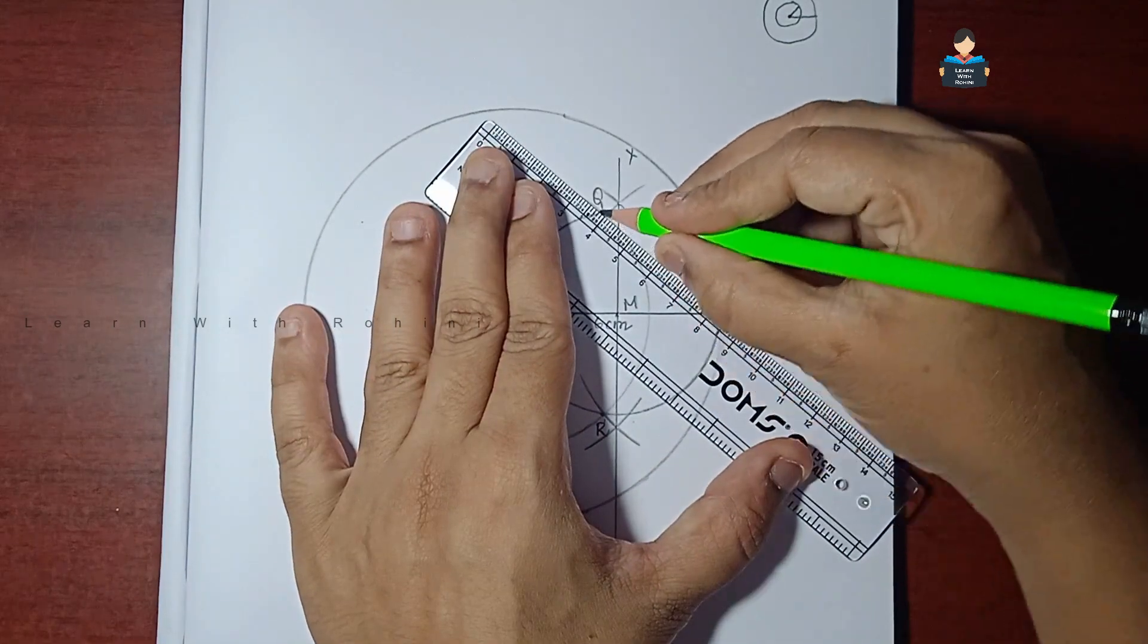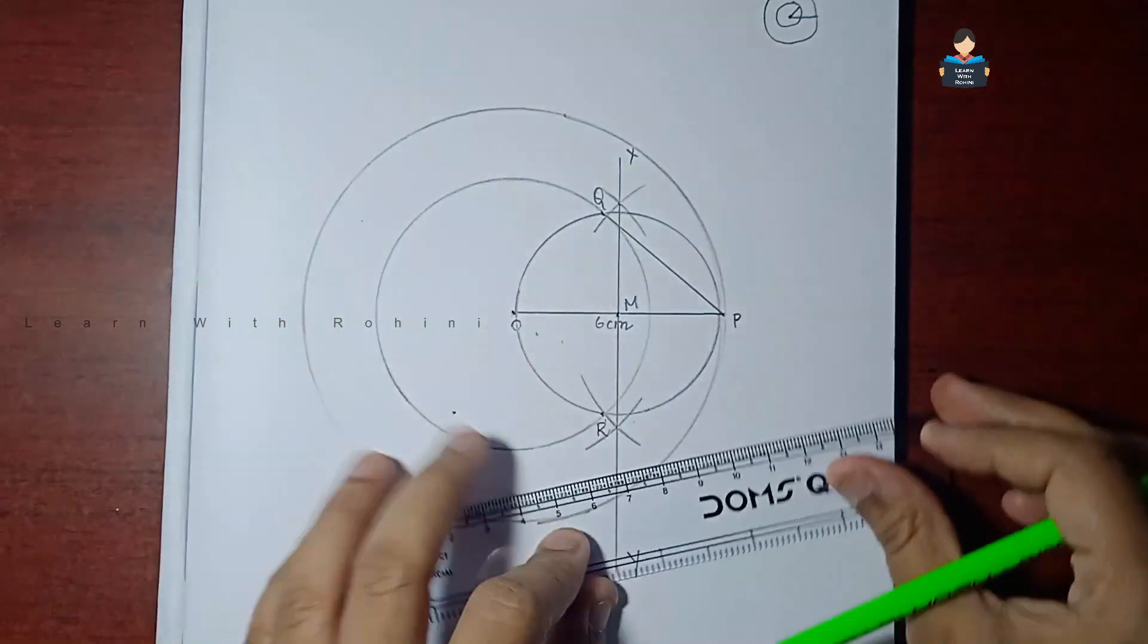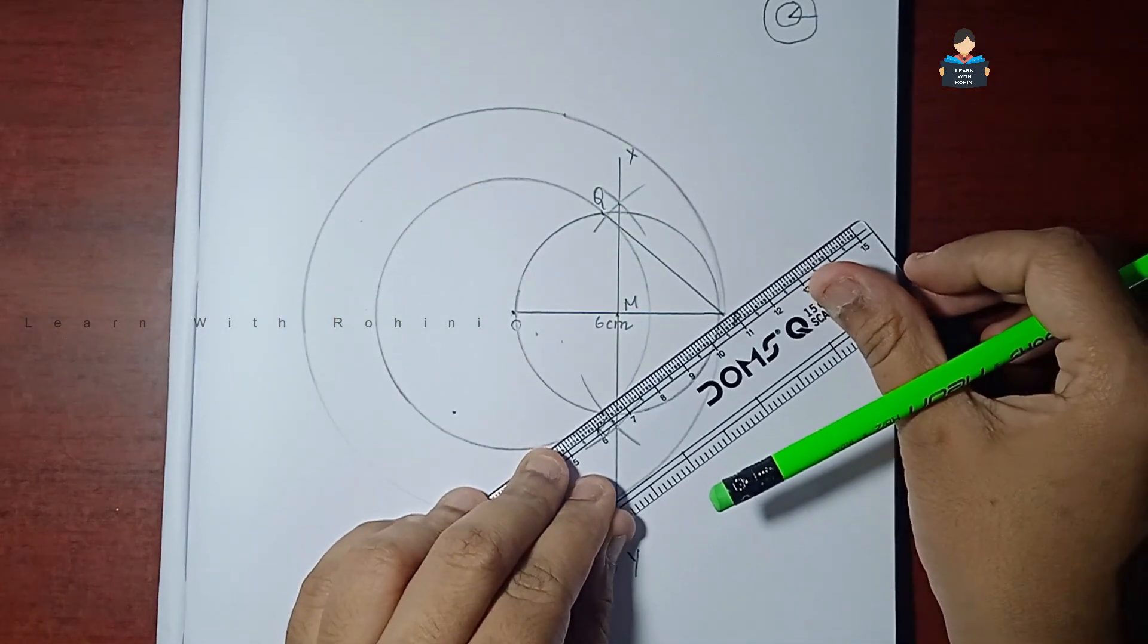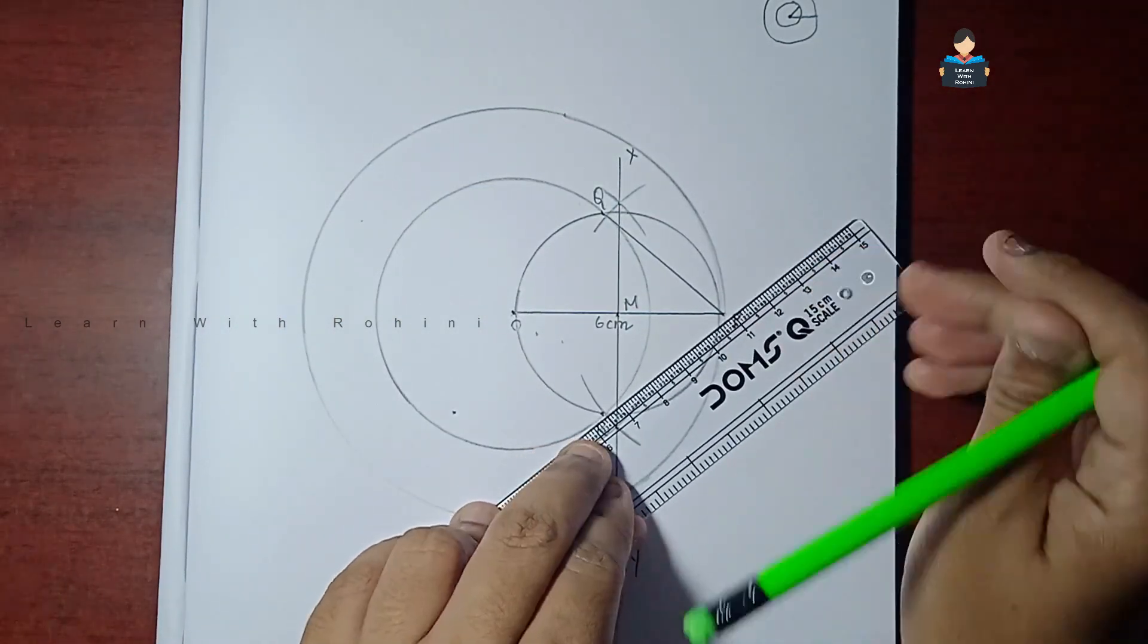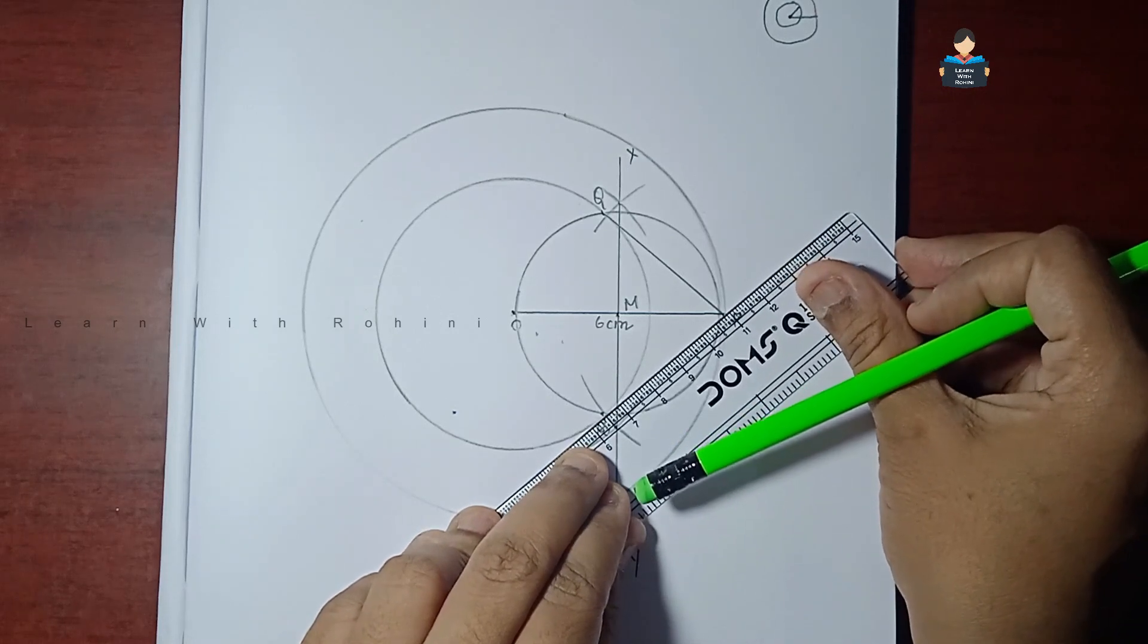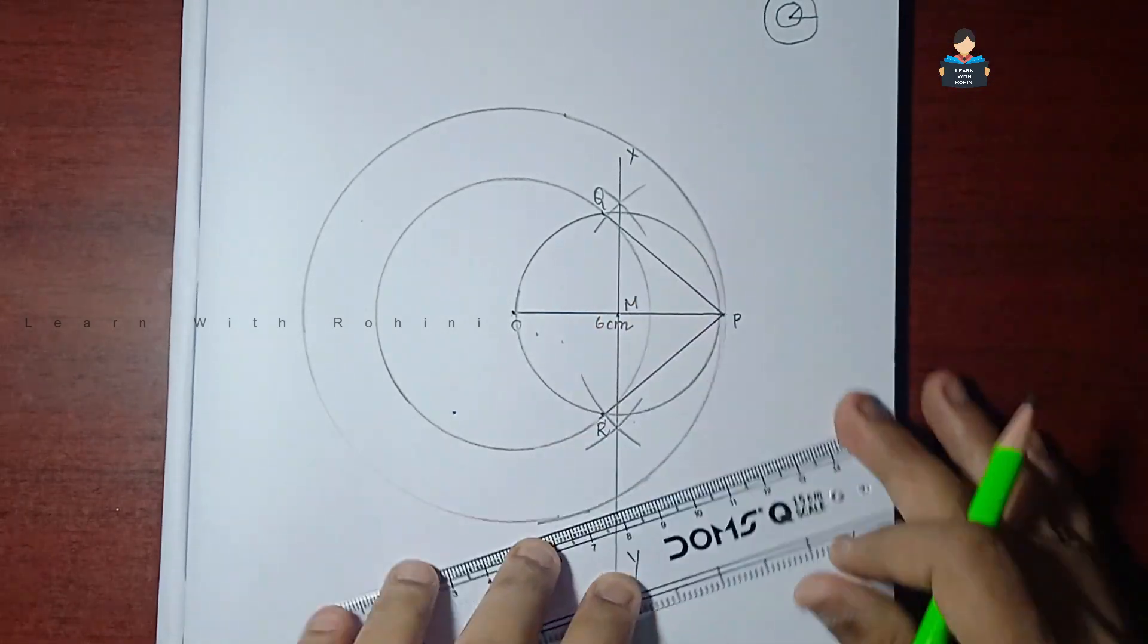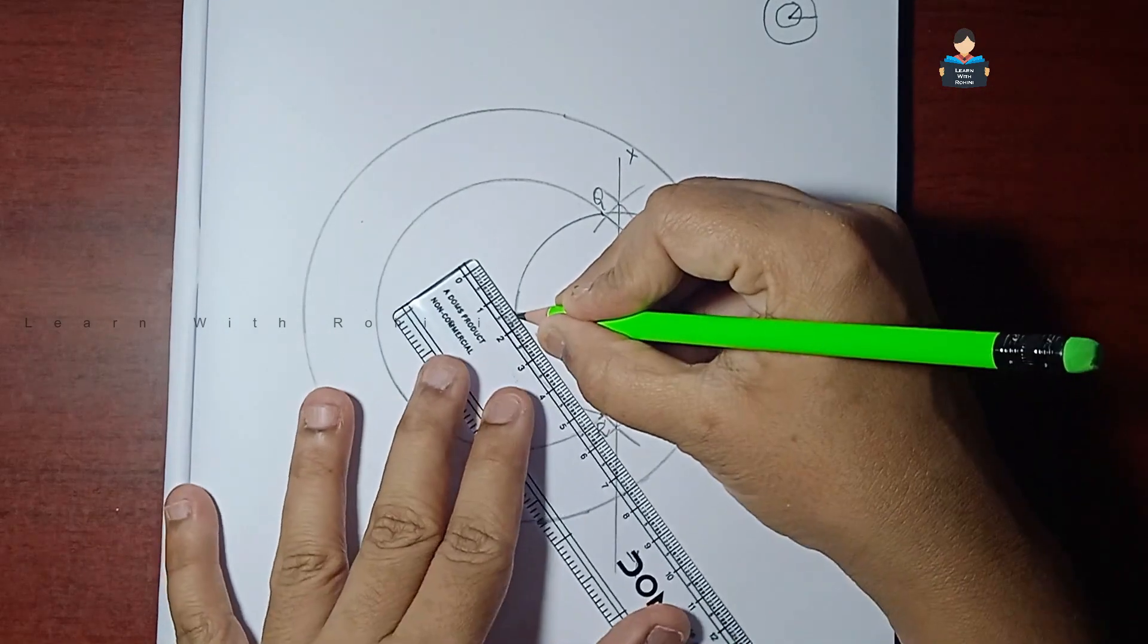Now what do we do next? Concentric circles. So we have two circles. This is the same step. Now what do we do next? This is the radius.